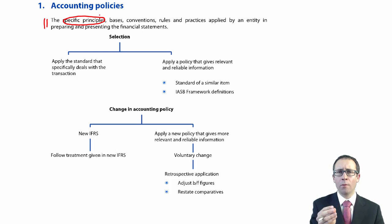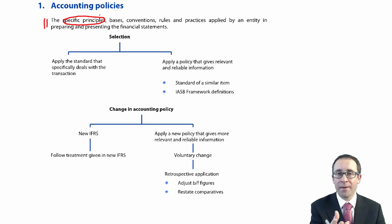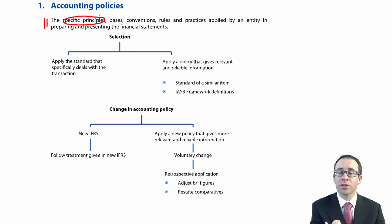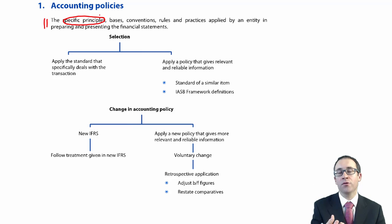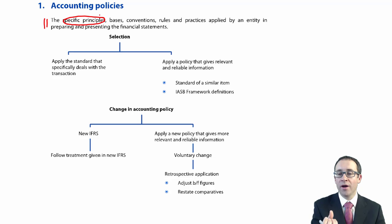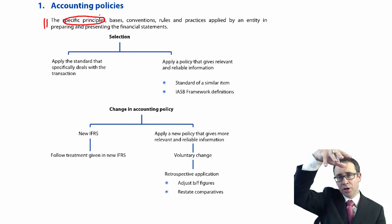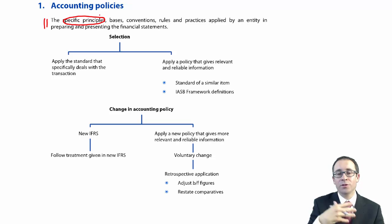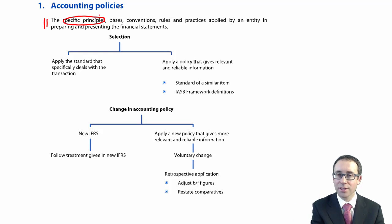When we looked previously at IAS 16, it told us the specific measurement basis to measure the asset at cost. It gave a specific measurement basis for how to depreciate the asset, and specifics on how to revalue the asset. So you've got the framework sitting at the top, and then all the specific rules within each accounting standard — that is the accounting policy.